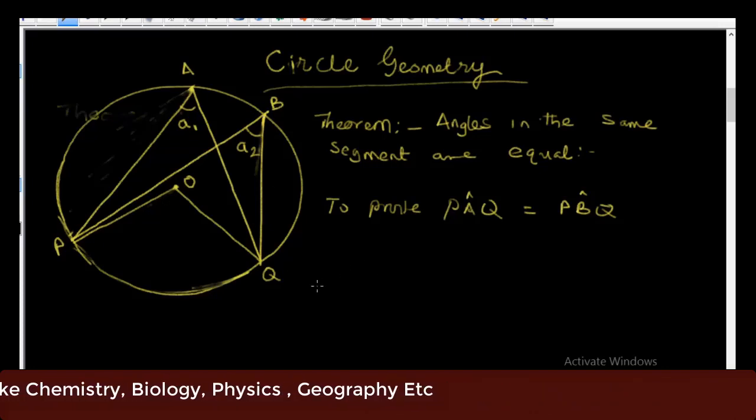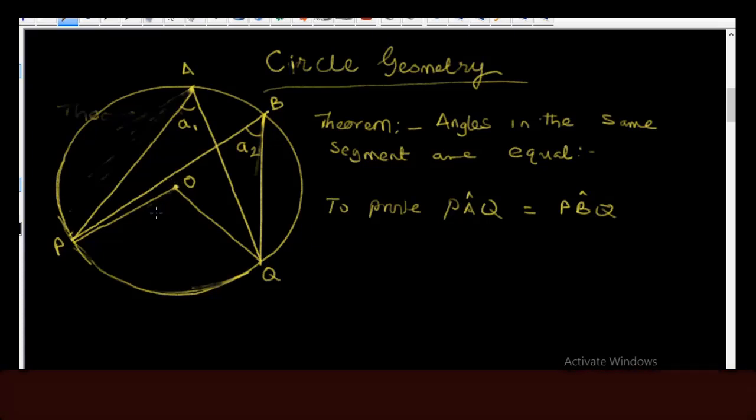That is what we want to do now. So for you to be able to do this properly, which I've done in the diagram already, you are going to do a small construction. You're going to join point Q to the center of the circle which is O and also join point P to the center of the circle which is also O. Now let's prove.